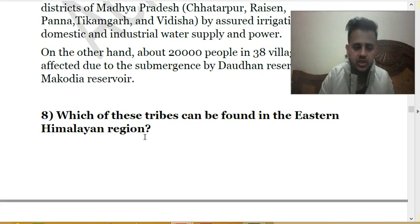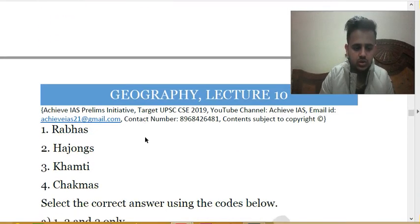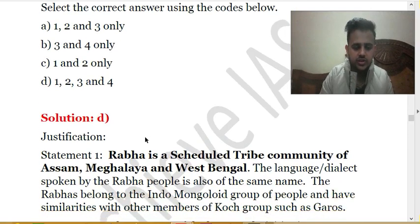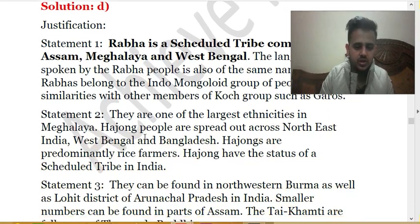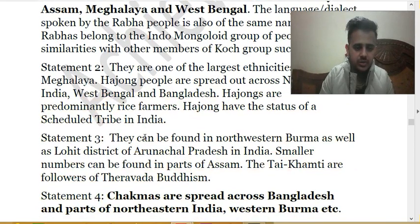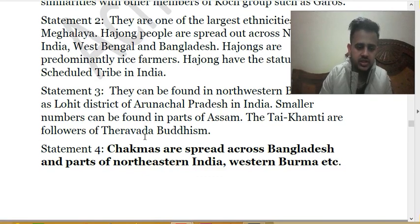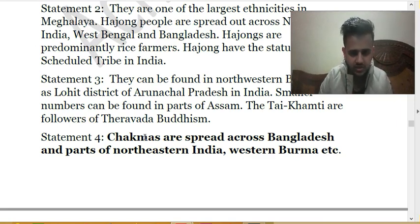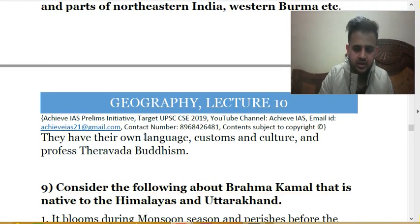The eighth question: which of these tribes can be found in the eastern Himalayan region? (1) Rabha, (2) Hajong, (3) Khamti, (4) Chakmas. All four tribes are found in the eastern Himalayas. Rabha is a scheduled tribe community of Assam, Meghalaya, and West Bengal. The Hajong people are spread across northeast India, West Bengal, and Bangladesh and are predominantly rice farmers. Khamti tribes are found in the Lohit district of Arunachal Pradesh. Chakmas, found in northeastern India, practice Buddhism, as do the Khamti.